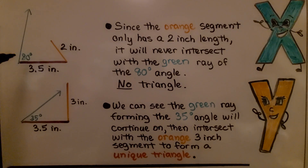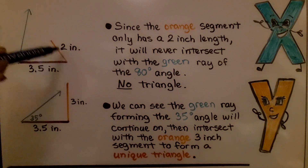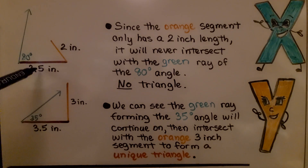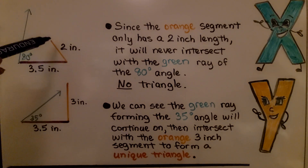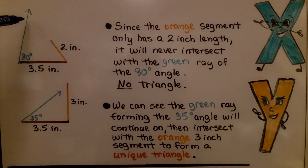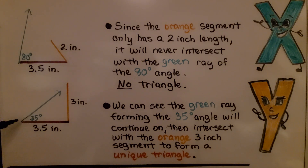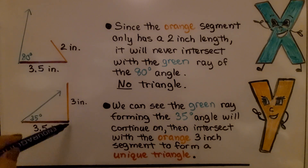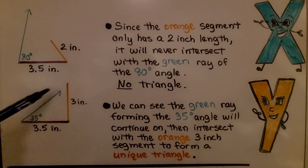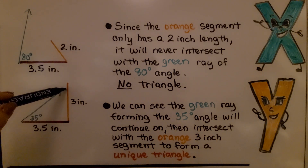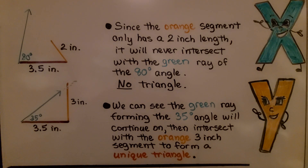Now take a look at this one. We have an 80 degree angle and a ray continuing up in that direction, but this is just a 2 inch segment with a 3.5 inch base. Since the orange segment only has a 2 inch length, it will never intersect with the green ray of the 80 degree angle — it stops right there with no arrowhead. That's no triangle. Here, with the same 3.5 inch base, we have a 35 degree angle and a 3 inch line segment. The green ray forming the 35 degree angle will continue and intersect with the orange 3 inch segment to form a unique triangle.